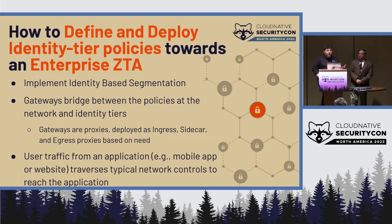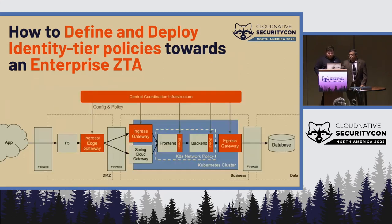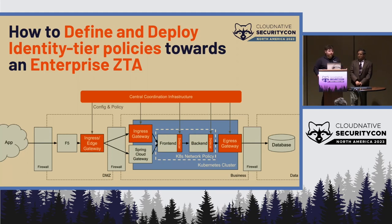As we look at how we realize enterprise ZTA, the first step is to implement identity-based segmentation and migrate towards identity-based policy, leveraging these patterns to ease dealing with the traditional perimeter. You'll likely want central coordination infrastructure above the service mesh. Looking at a traditional corporate topology with three zones, we can insert identity-aware policy enforcement points — gateways, fundamentally an Envoy proxy — in the data path to start leveraging higher-level policy at all those locations.